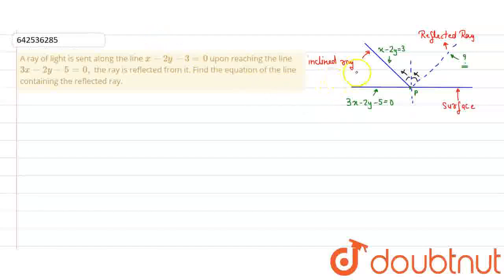First of all, our incident ray intersects with the surface. That means this equation will intersect with this equation at the point P. So, we will find the P point.